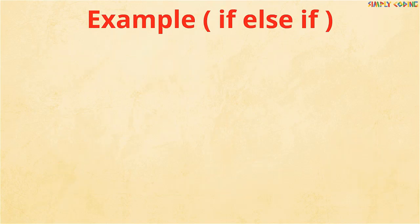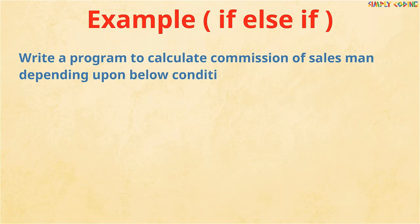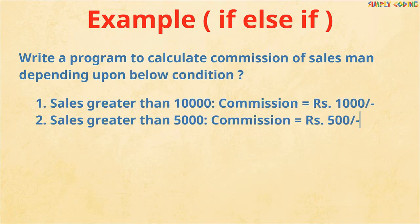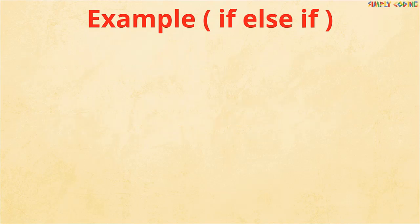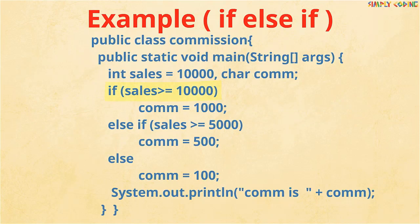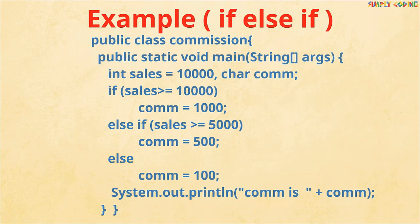Let's take another example — a program to calculate the commission of a salesman depending upon three conditions. We will create an if-else-if construct: the first if checks the first condition, then the middle condition, and finally the last condition. The drawback of if-else-if is that when the number of alternatives increases, the complexity of the code increases and the logic is not straightforward.